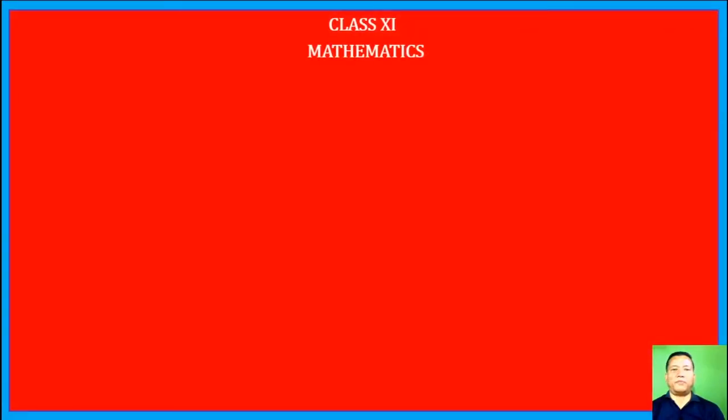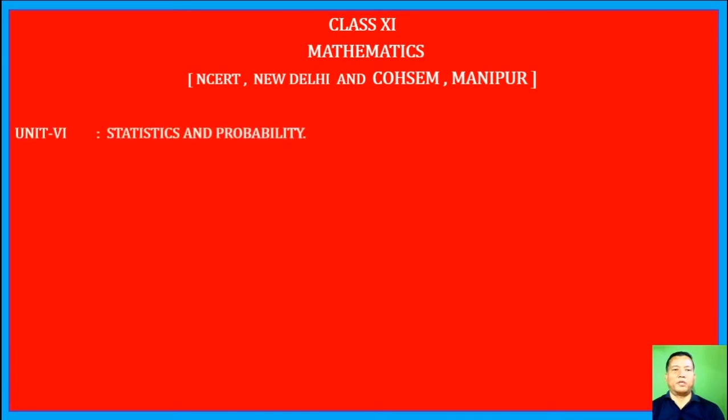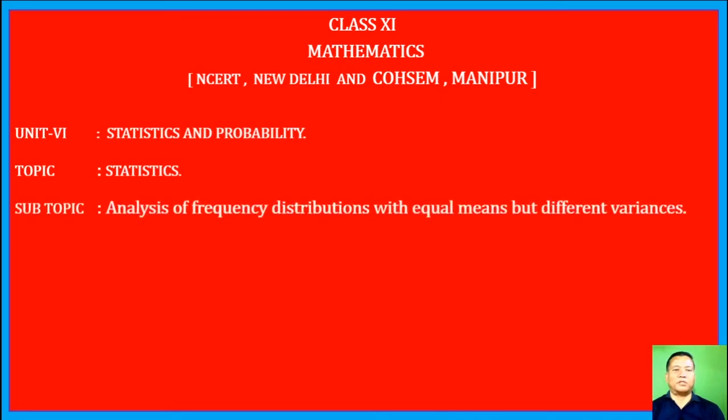Class 11 Mathematics NCERT, New Delhi and Cosim Manipur. Unit 6: Statistics and Probability. Topic: Statistics. Subtopic: Analysis of frequency distributions with equal means but different variances. Exercise 15.3.